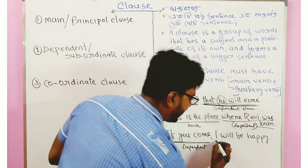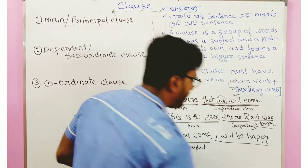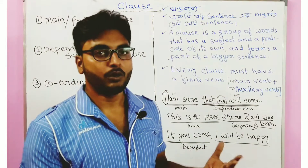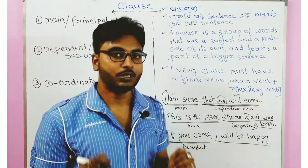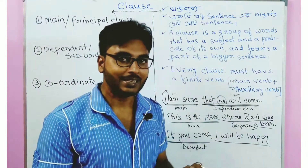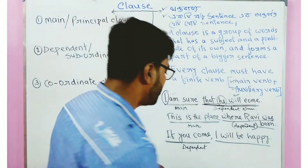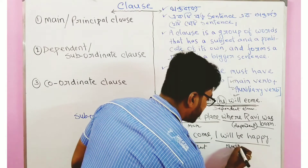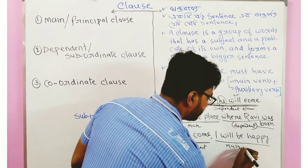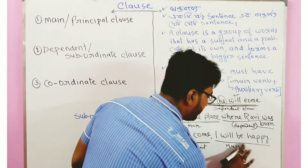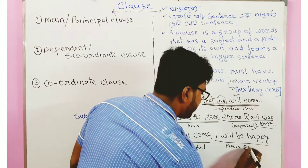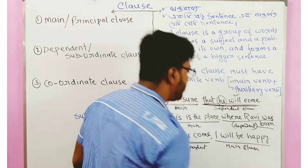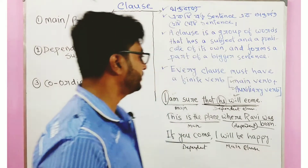For example, 'I will be happy' is a complete sentence. This is the main clause or principal clause — it makes complete sense on its own.